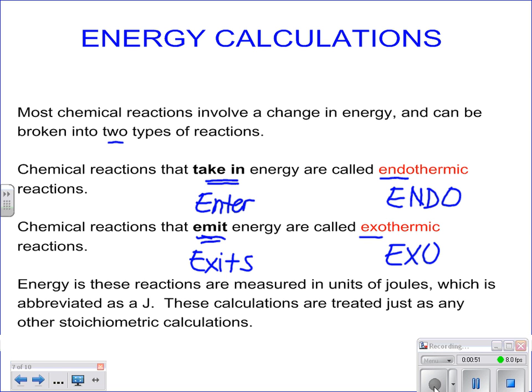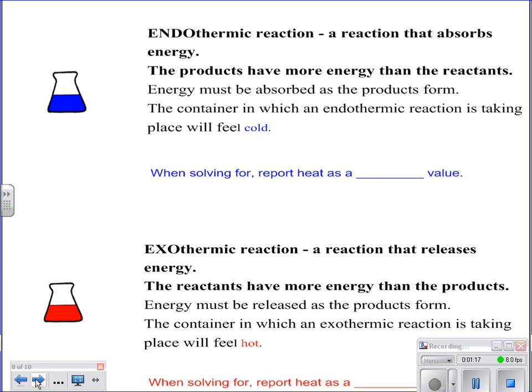When we work with these, we're going to be talking about units of joules, abbreviated as capital J. In your calculations you're going to see kilojoules instead of joules, but we all know that one kilojoule equals a thousand joules. The cool part is we are just going to treat these as stoichiometric calculations, and you're always going to start with a balanced equation.